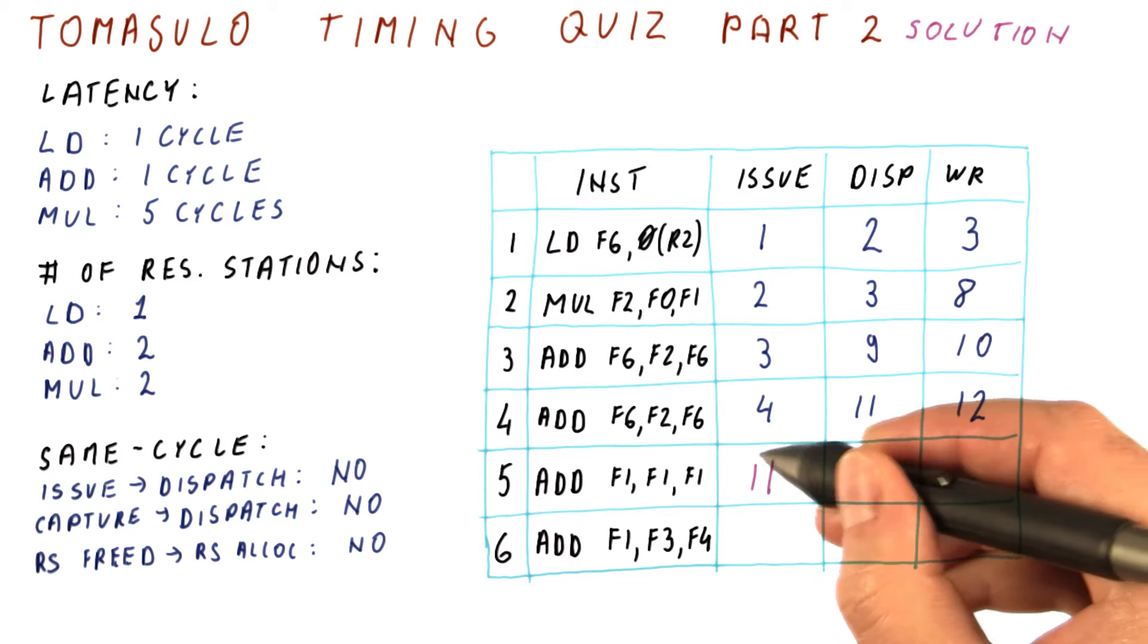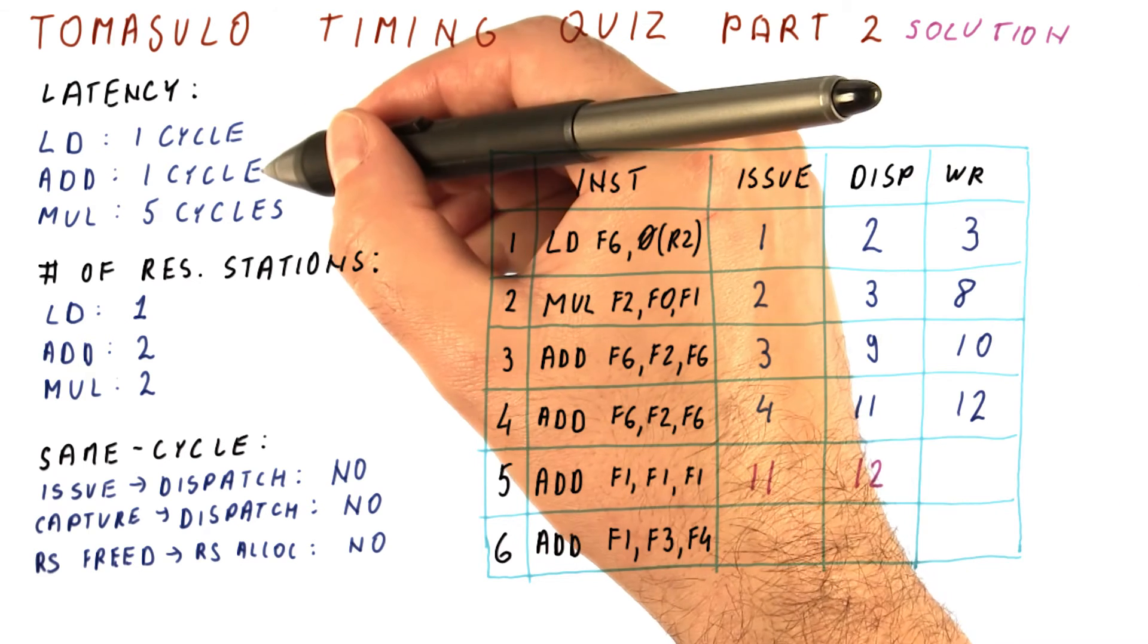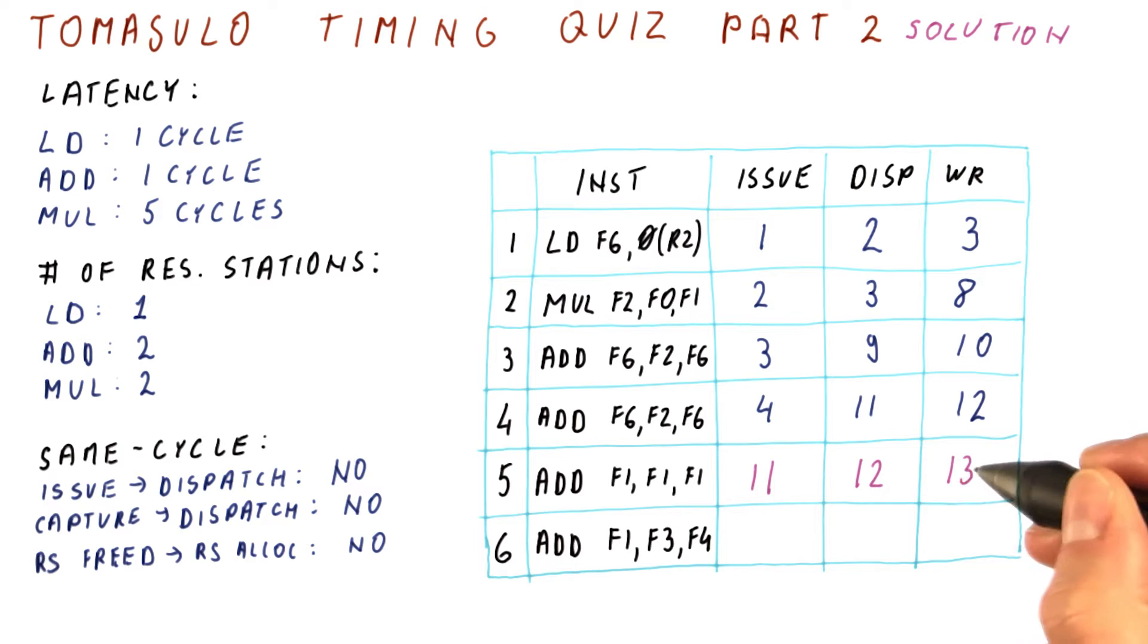Once this ADD issues, it might dispatch in cycle 12, assuming it has no dependencies. And indeed, it doesn't, so it dispatches in cycle 12, and then executes for one cycle and broadcasts its result in cycle 13.